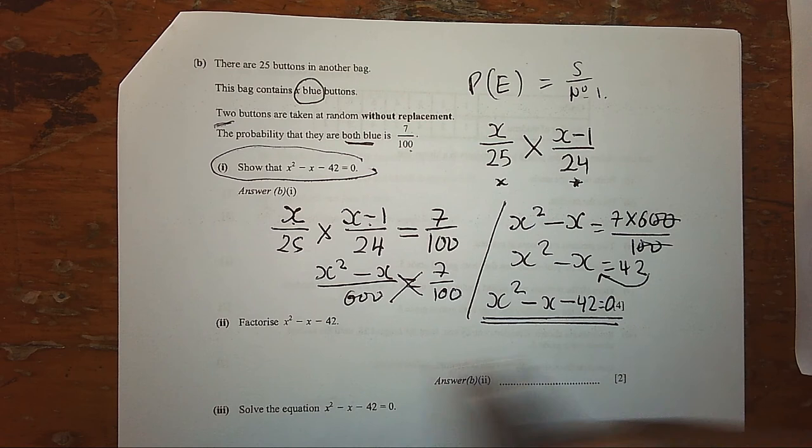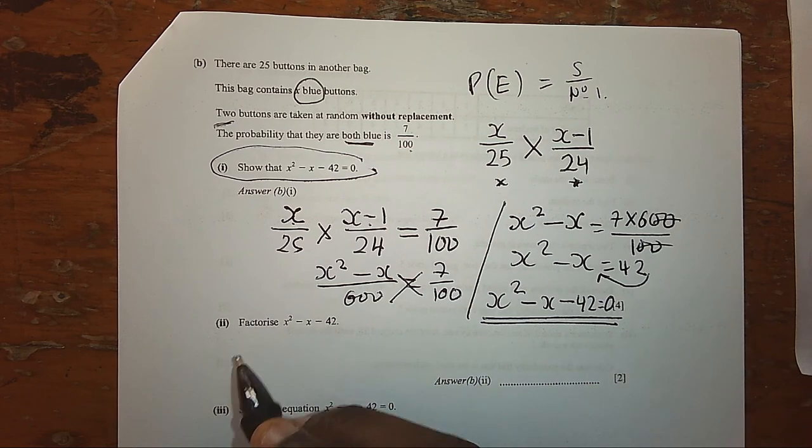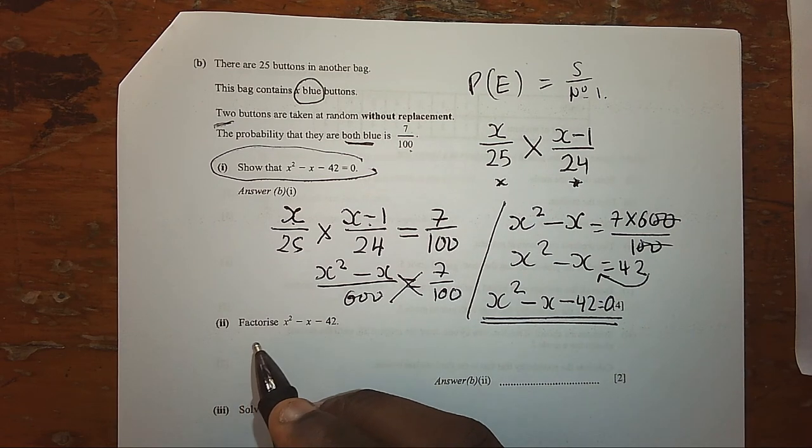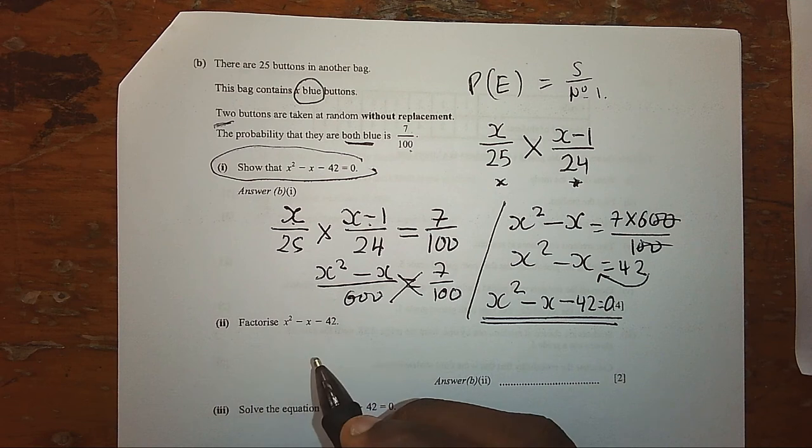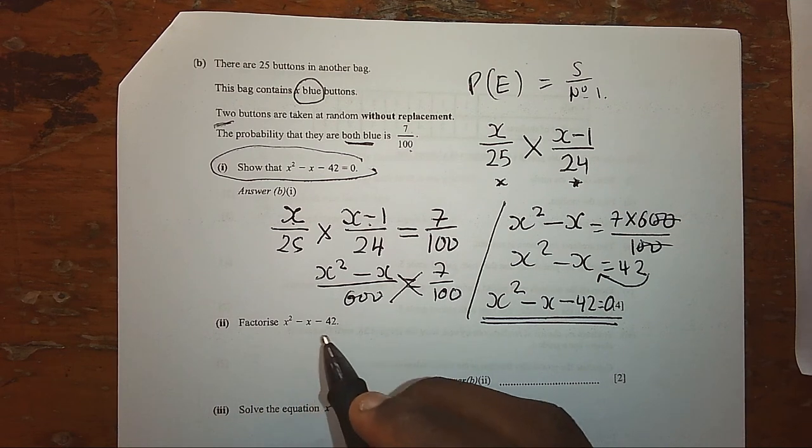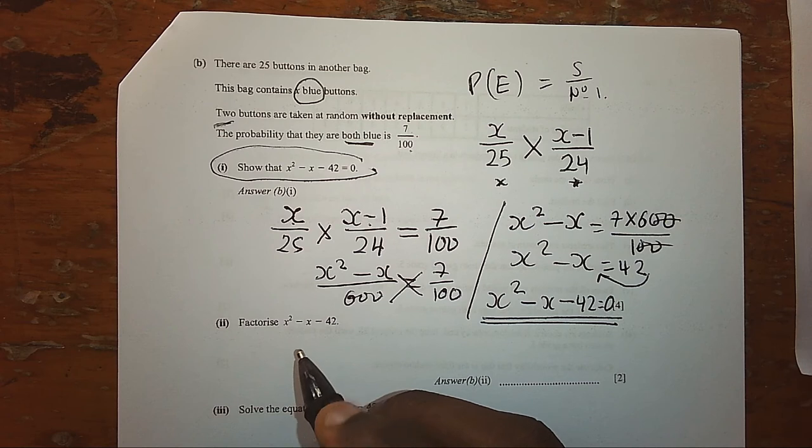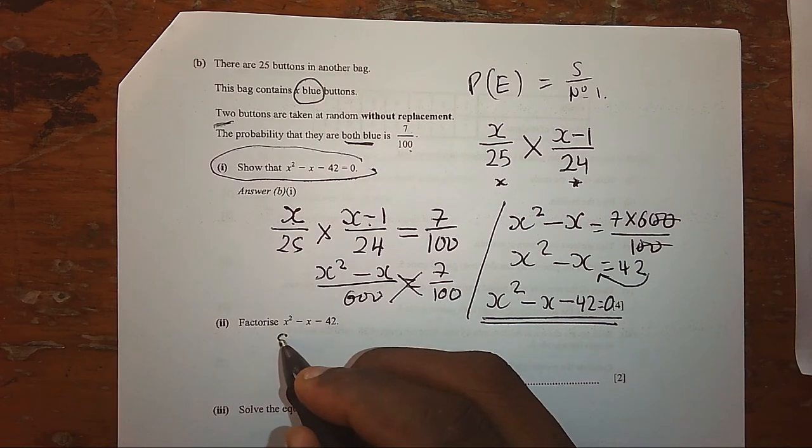When we go to part B, of course this is algebraic. We are supposed to factorize. We are now referring to which method we can use to factorize. We can use the sum product factor method.